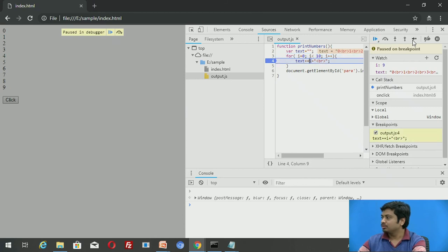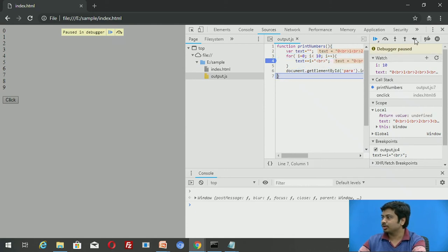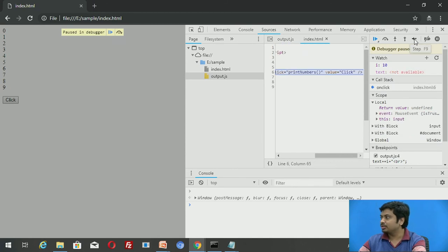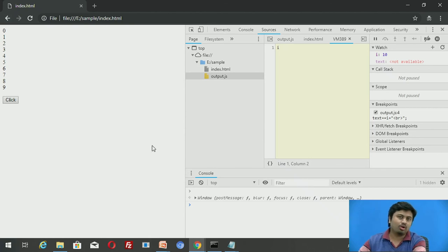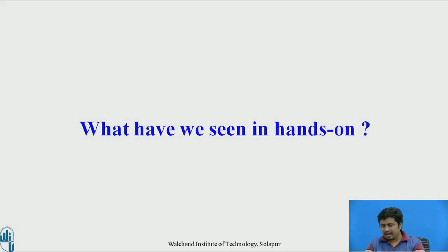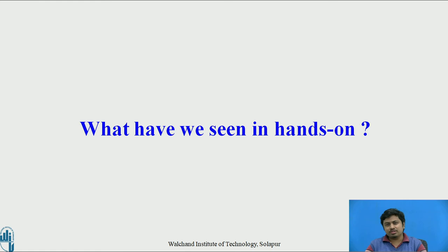Continuing to step through — 7, 8, 9 — you can see the text variable changing with each iteration. Once I'm done, the debugger completes execution. You can click the paragraph and see the output: 0, 1, 2, 3 through 9. So we have seen how to write HTML code, attach a script, debug using Chrome Developer Tools console and the Sources tab, insert breakpoints, add watch variables, and carefully observe code execution.